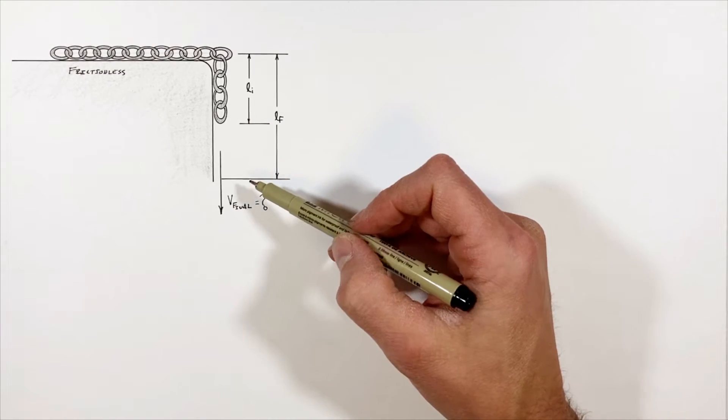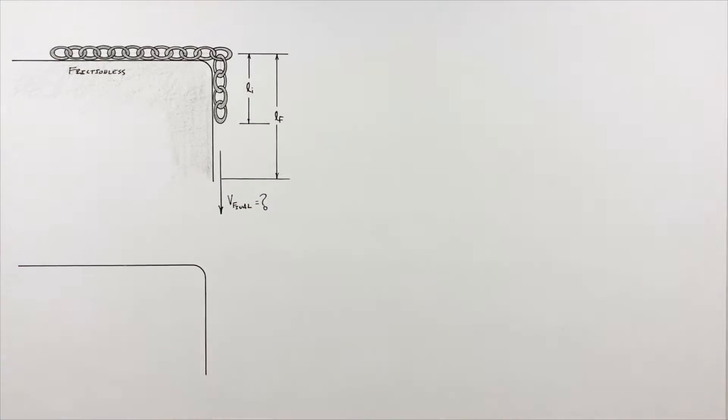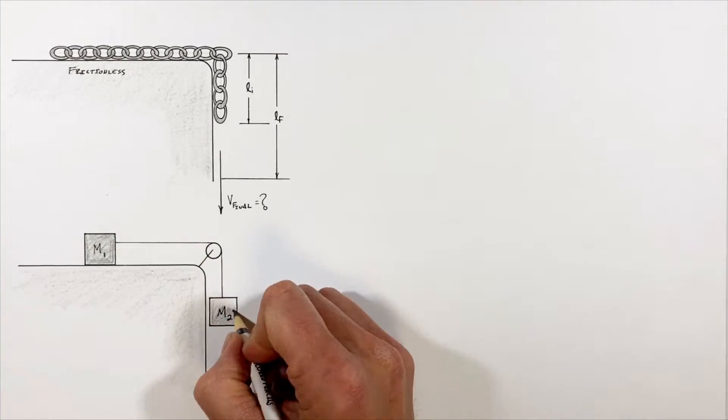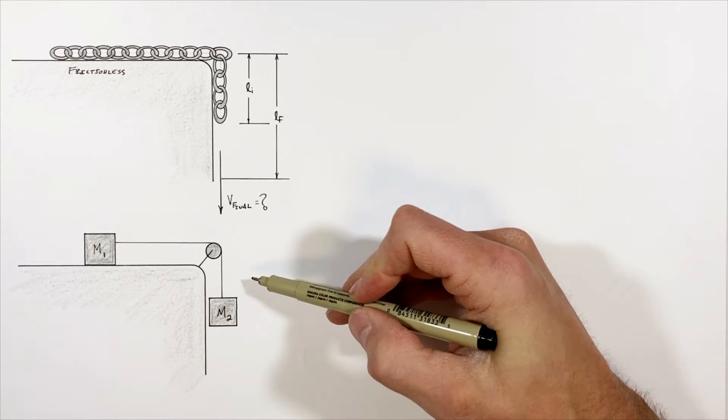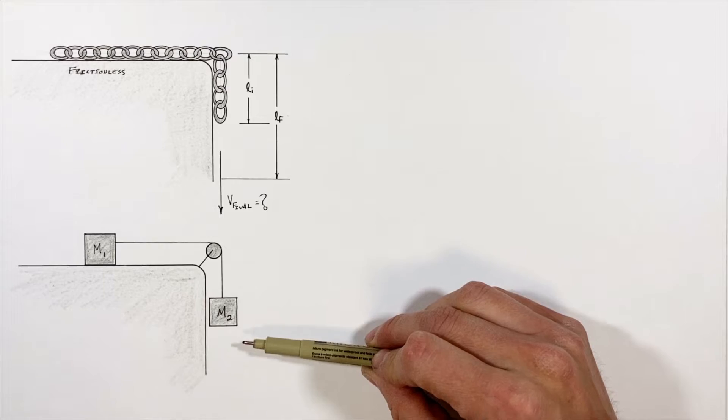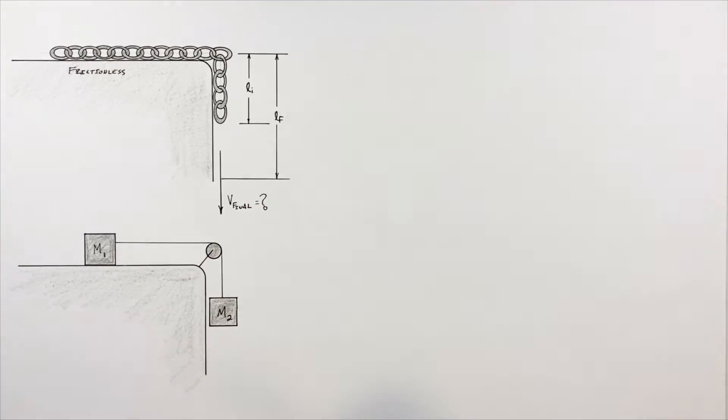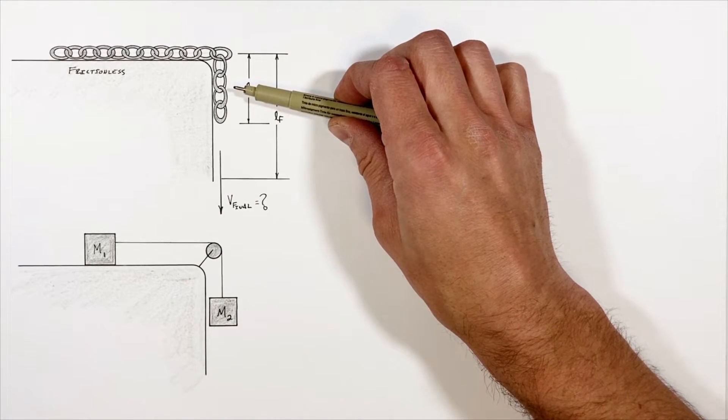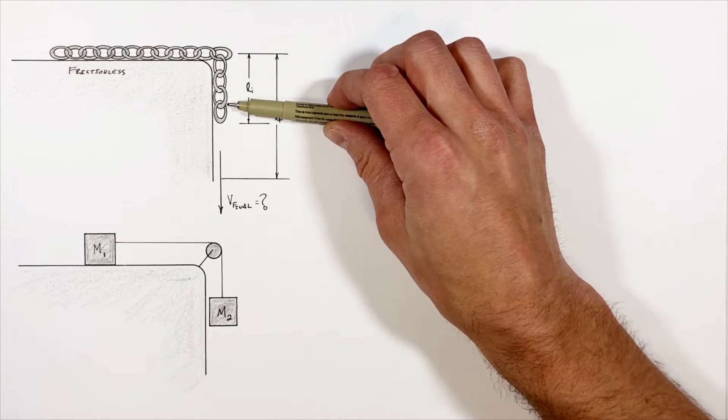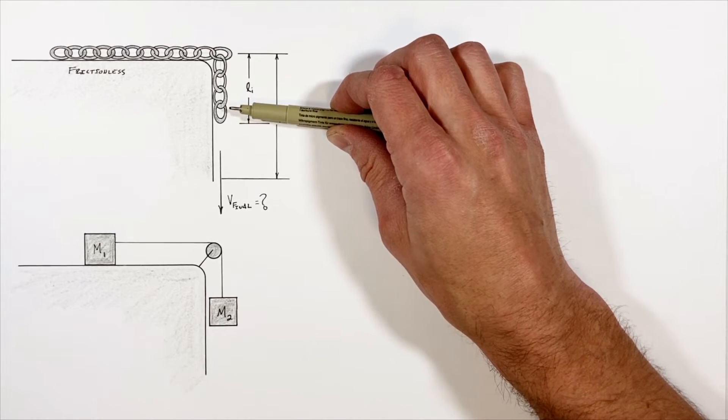Now the fact of the matter is this problem is very similar to an Atwood machine. With an Atwood machine like this, which we've explored in the past, you have a mass which is being pulled down by the force of gravity, and that is in turn dragging another mass along with it because they're connected by a string. The difficulty in dealing with the chain is that as the chain moves downward, the mass that is hanging off the edge of the table is going to increase, and that creates a little bit of a problem in our solution.